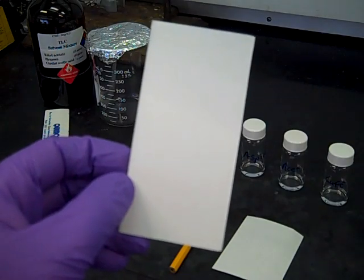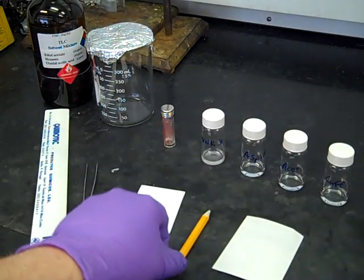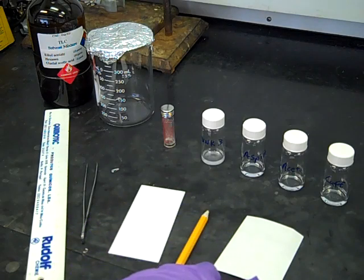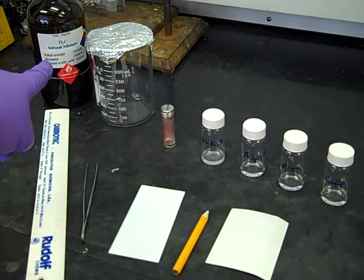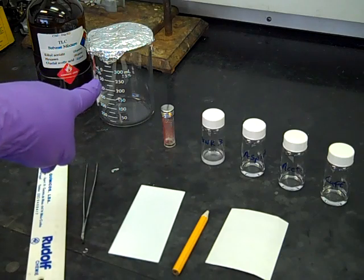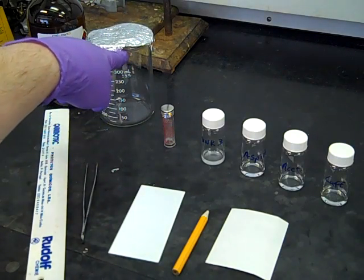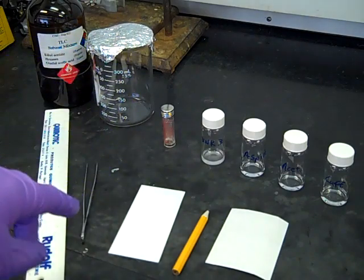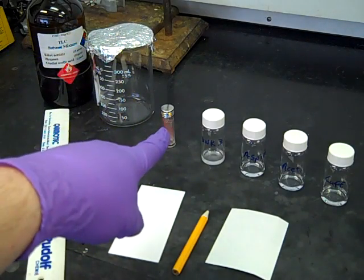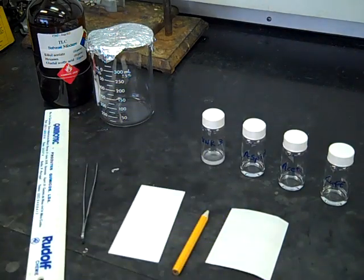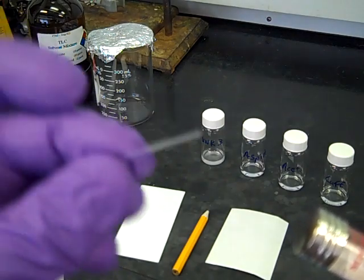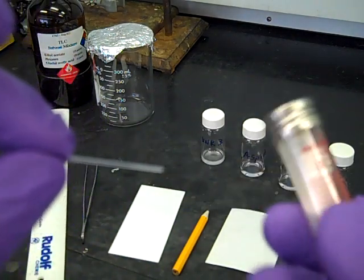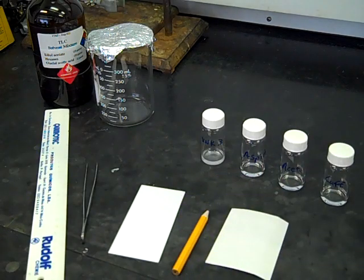You'll need a pencil to write on the plate, a filter paper wick, and our TLC solvent back there—that's the 15 to 10 to 1 mixture mentioned in the PowerPoints. We've got our 400 mL beaker with a foil lid on top that fits nicely like a cap. We also have micro capillaries, which are really tiny little glass tubes—open on both ends—that will be found in a container like this.